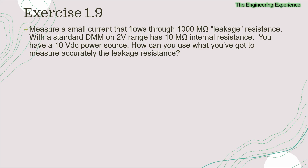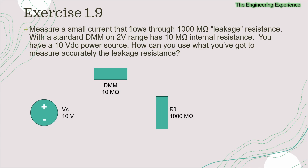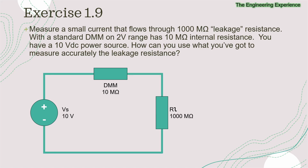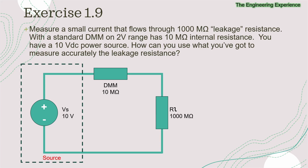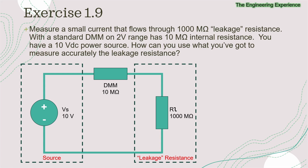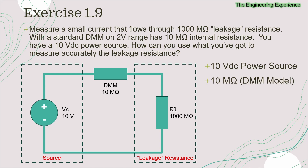First of all, let's write down everything we know about the circuit and draw out a circuit schematic. We have a 10V power supply, a DMM set to its 2V range with an internal resistance of 10 MΩ, and a load resistor or leakage resistor of 1000 MΩ. We can connect the components in series to create a circuit like this to measure the leakage current. We have the source on the left, the leakage resistance on the right, and in the middle, the model of a voltmeter — a 10 MΩ resistor to model the DMM, and a 1000 MΩ resistor to model the leakage resistance.